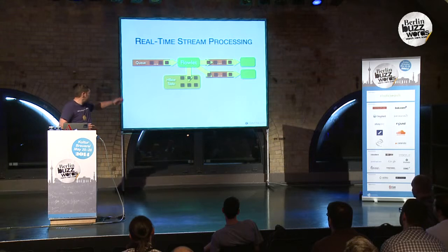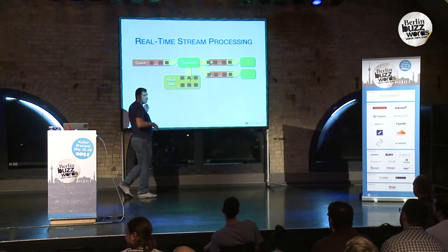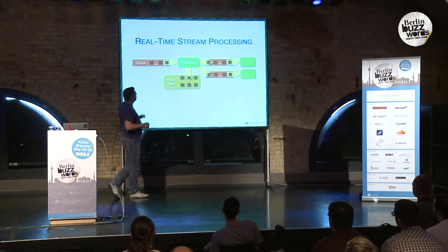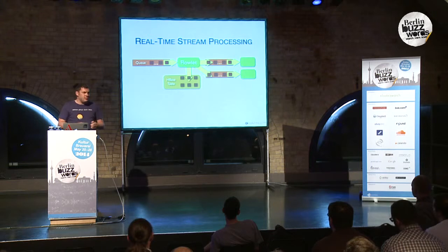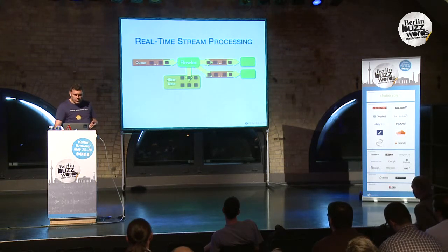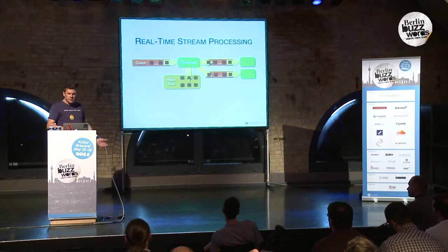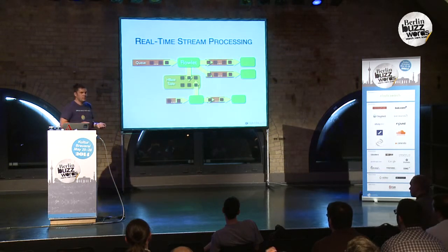In the reactor, a real-time processing system is called a flow, and every individual agent is called a flowlet. It's a very simple programming abstraction. Now, this HBase table might be shared with other stream processing applications, so we might have another flowlet that also writes to that table.